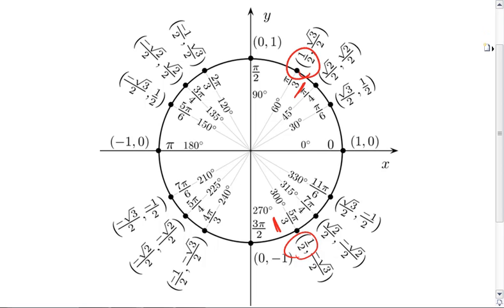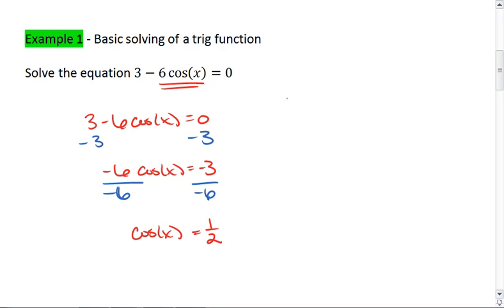However, we're not quite done yet. So we know that x can equal pi-thirds, or x can equal 5 pi-thirds. But, remember this.